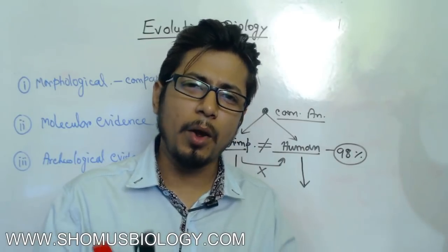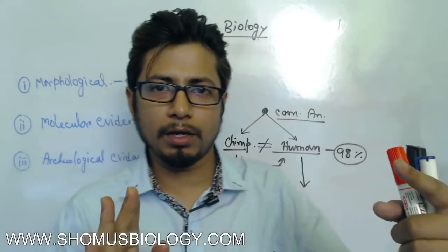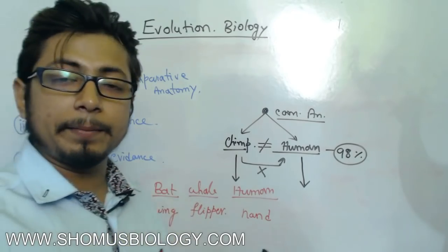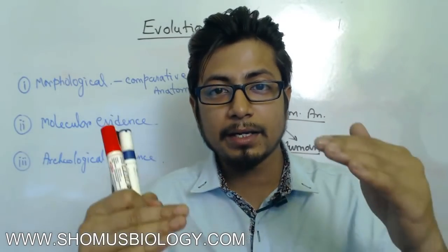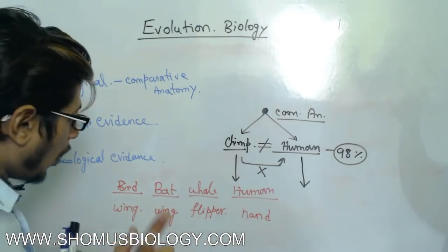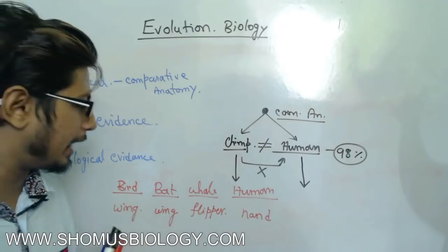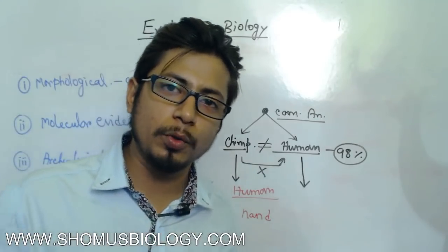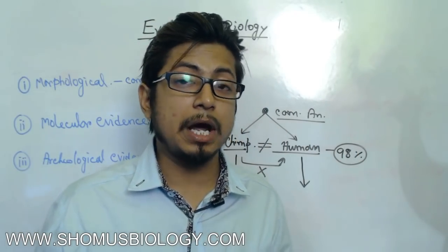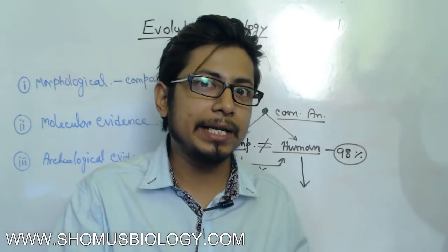If you look at the hand anatomy and bone structure, you will find that for all of us — bird, bat, whale, and human — the structure is the same. The names of the bones are the same: humerus, radius, ulna — all these bones linked to one another are the same. The number of bones is the same. Although the length of one part may vary between a human and a whale, or a bird and a human, the number and sequential position of the bones are the same.